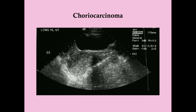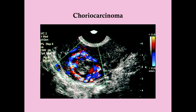Looking at a choriocarcinoma on ultrasound, you might note that it looks somewhat like adenomyosis, with intramural thickening. The difference between this and adenomyosis is that adenomyosis will not have an elevated HCG. This is a focal intramural tumor, and you can see on Doppler that there's very rich vascularization — that will always be seen with choriocarcinoma. Remember, this is a tumor of placental tissue, so it's going to be very vascular.